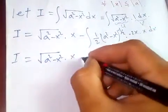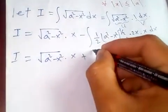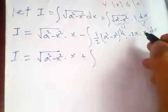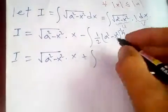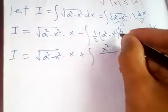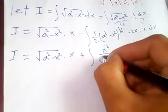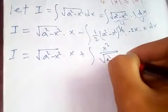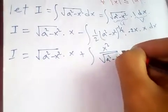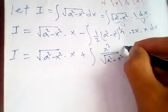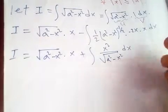After simplification, the two negative signs cancel and we get: I = x√(a² - x²) plus the integral of x² / √(a² - x²) dx.